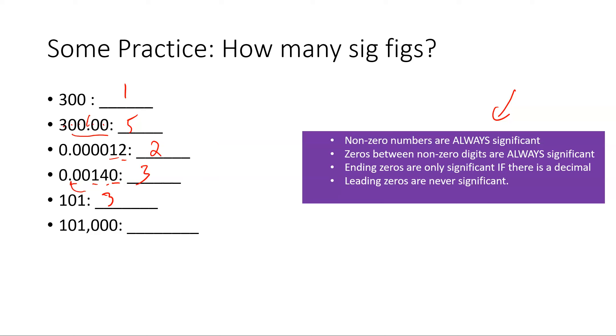101,000. We have the one and the one, so there's two. That zero is significant because it's between. These zeros are not because they're ending and there's no decimal, so that would be three.